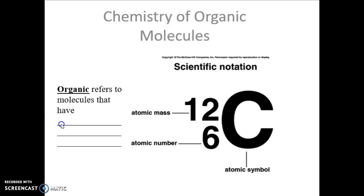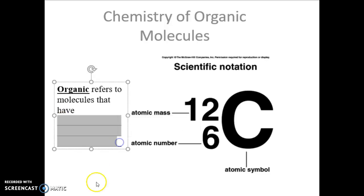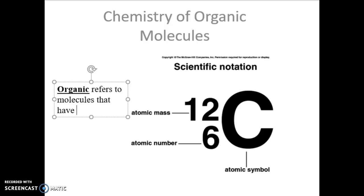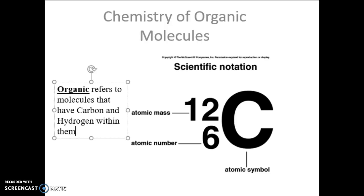The first thing we have to do is define what is meant by an organic molecule. When you go to a grocery store, they have that section that says organic — organic celery, organic apples, etc. That is a different spin on what is meant by organic. In the true biological and chemical definition, organic refers to molecules that have carbon and hydrogen within them. That's it. That's what makes you organic — do you have carbon, do you have hydrogen?